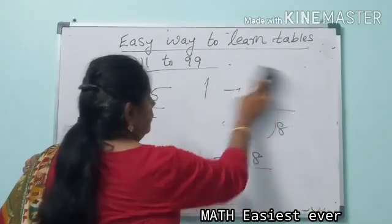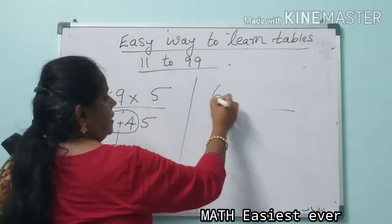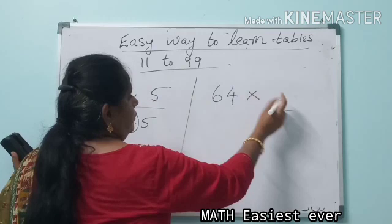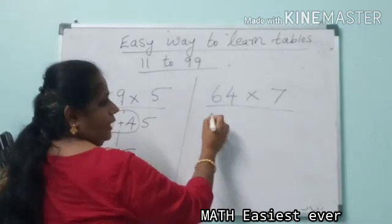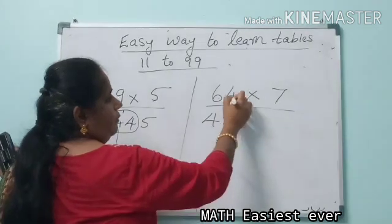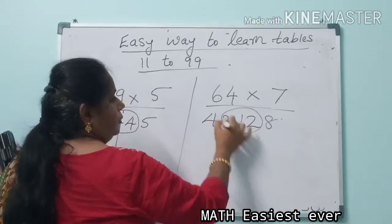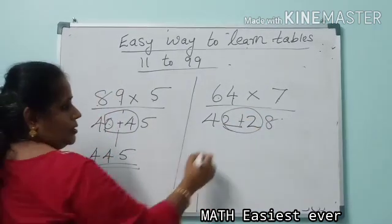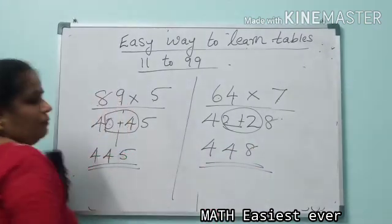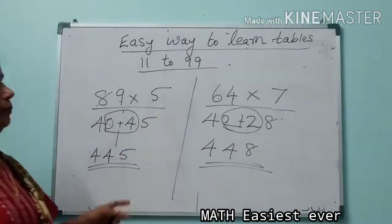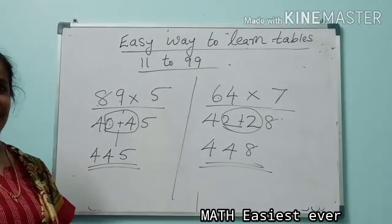One more example: 64 into 7. 6 sevens are 42, and 4 sevens are 28. What you have to do is add this 2. So 2 plus 2 is 4, and your answer is 448. Hope this type is very easy for you. You can practice like this. Thank you, children.